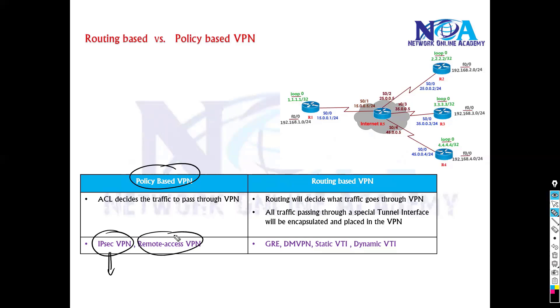Policy-based VPNs are what we use in normal IPsec VPNs, which we configured in the basic section, and also in remote VPNs. Whereas routing-based VPNs are used in GRE, DMVPN, and FlexVPN.